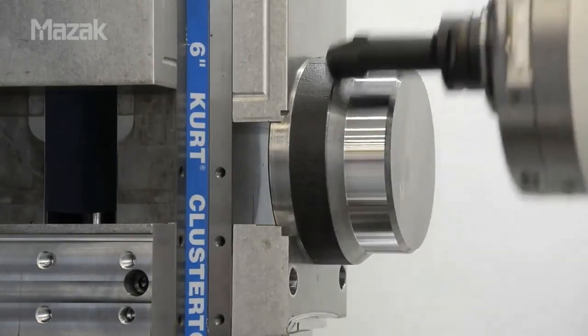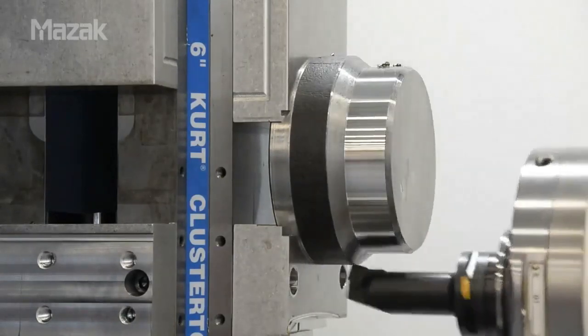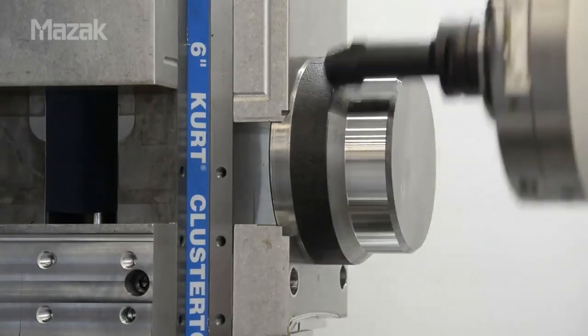The orbit turning software also allows calculations for constant surface speed on facing cuts and tool nose radius on turning cuts.